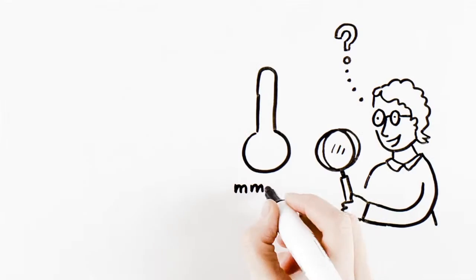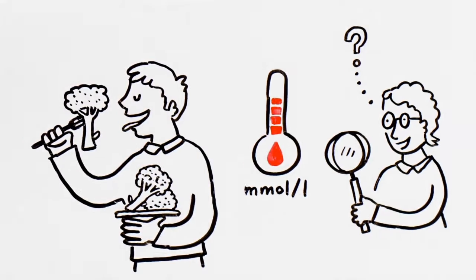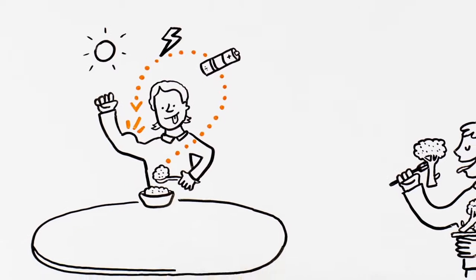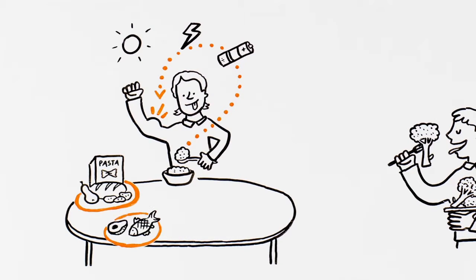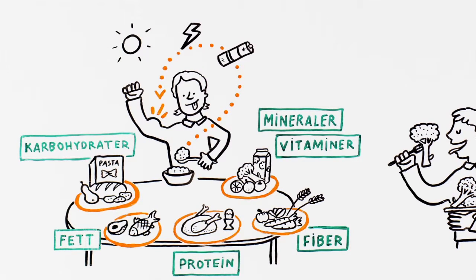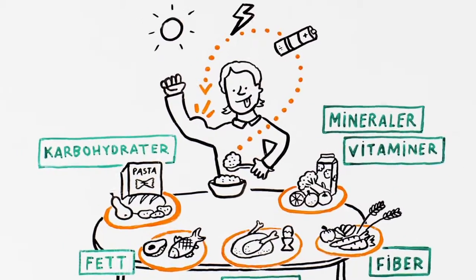What happens to your blood sugar when you eat? Your body needs energy. You get energy from the food you eat. The food contains different nutrients we all need: carbohydrates, fat, protein, fiber, vitamins, and minerals.